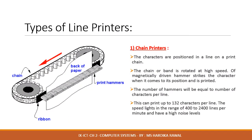The line printer is further divided into two categories: the drum printer and the chain printer. In chain printers, the characters are positioned in a line on a print chain. The chain or band rotates at high speed; a magnetically driven hammer strikes the character when it comes to its position. The number of hammers equals the number of characters per line. This can print up to 132 characters per line, with a speed of 400 to 2400 lines per minute, and has high noise levels.